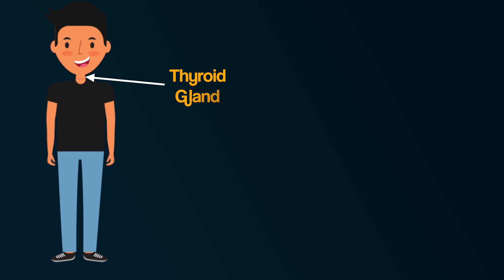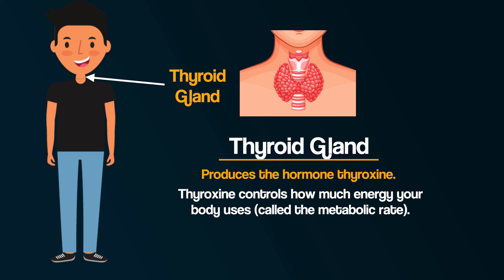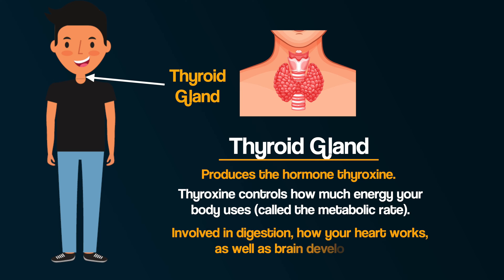Moving away from the brain, there is the thyroid gland. The thyroid gland produces the hormone thyroxin. Thyroxin controls how much energy your body uses — called the metabolic rate. It's also involved in digestion, how your heart works, as well as brain development. When the thyroid gland does not make enough thyroxin, many of the body's functions slow down.